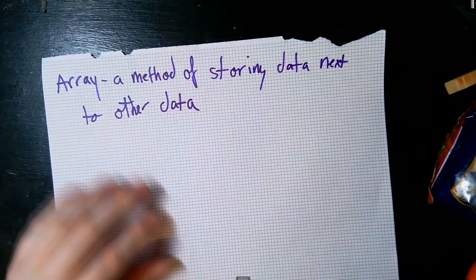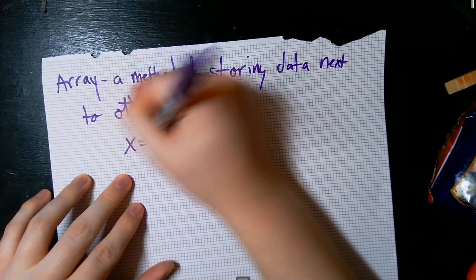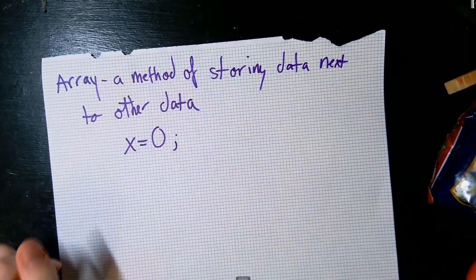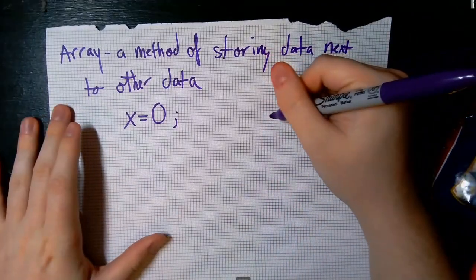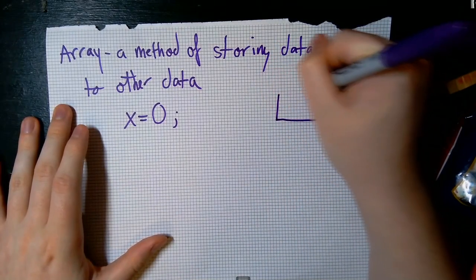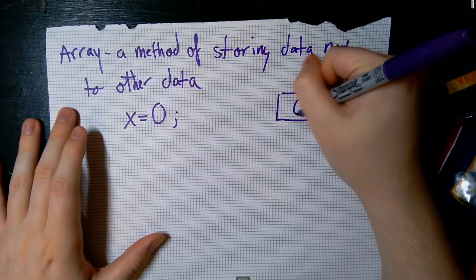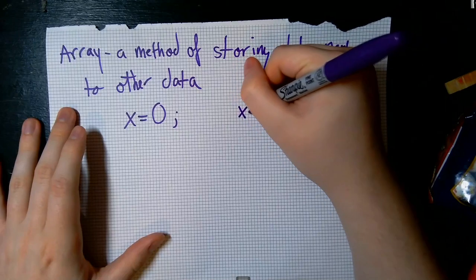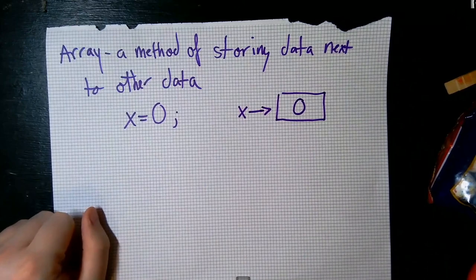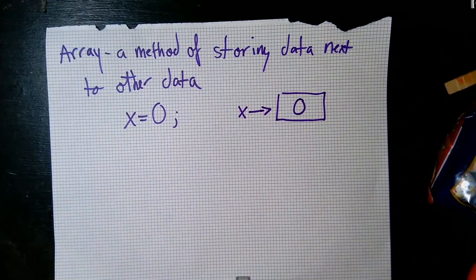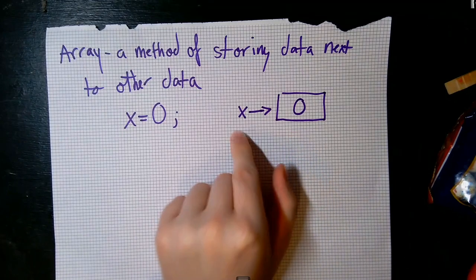When we're declaring variables in MATLAB, when we do something like x equals zero — hopefully with the semicolon so we're not generating too much unnecessary output — what MATLAB does is it assigns a little box somewhere in the computer's memory that has zero in it, and it's calling that box x. However, when we have an array, we can actually store many things together in a few different boxes under the same name.